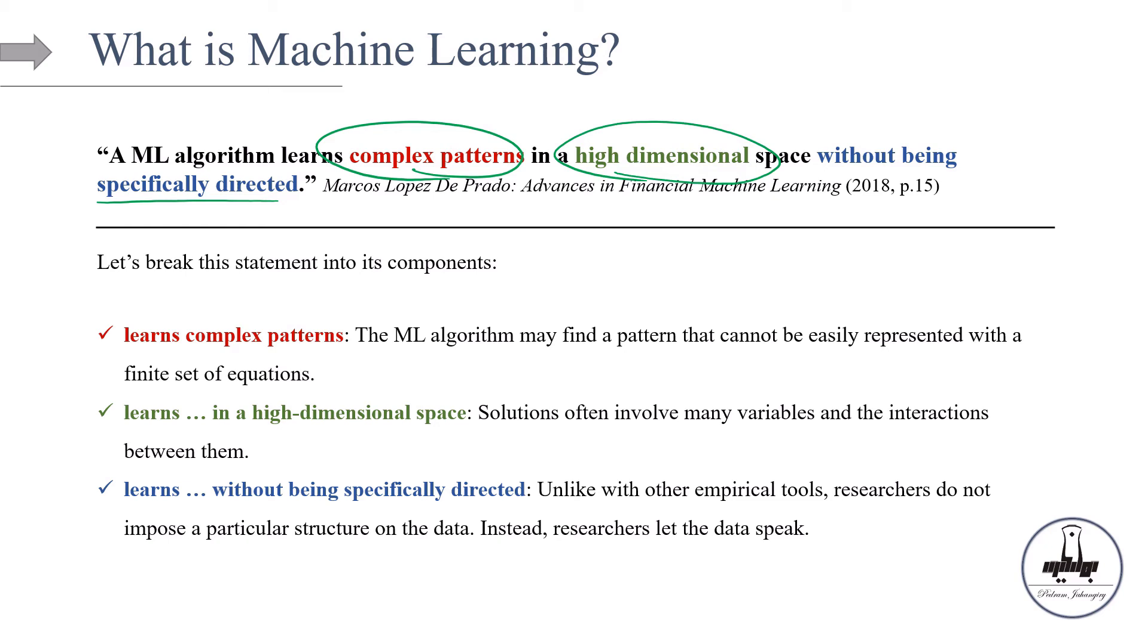Finally, the machines learn without being specifically directed. Unlike with other empirical tools, researchers do not impose a particular structure on the data; instead, you let the data speak. The main point is that if any of these three conditions applies—learning complex patterns in a high dimensional space without being specifically directed—then you're dealing with a machine learning model.